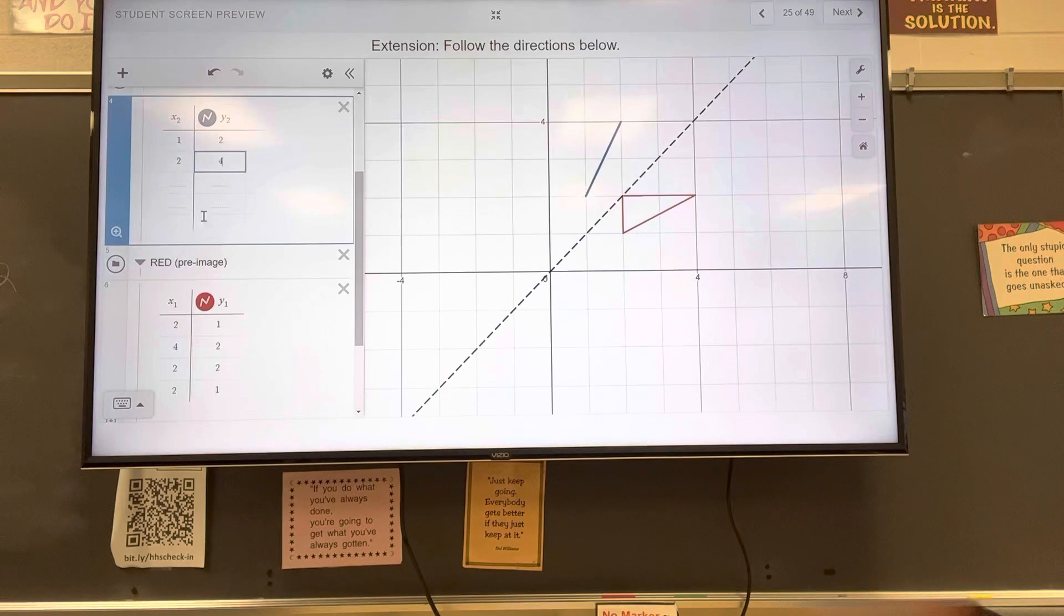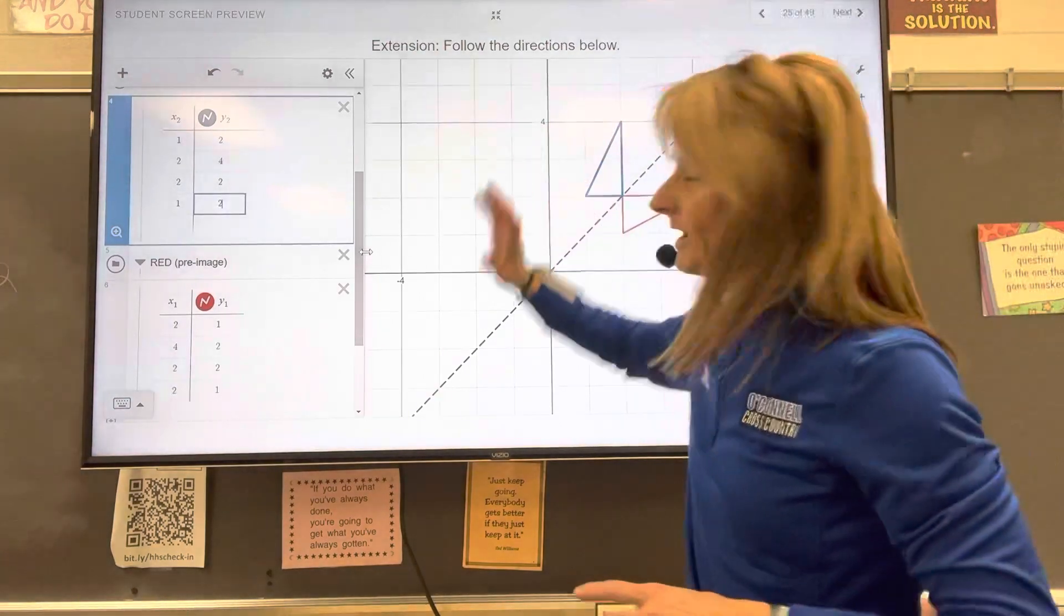2, 4, 2, 2, and then 1, 2. You can see it reflects over the line, y equals x.